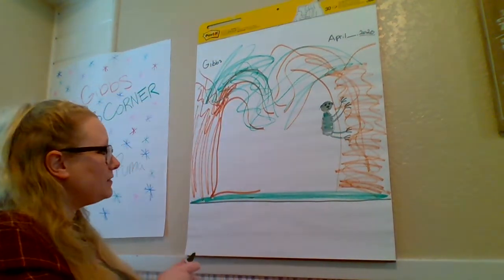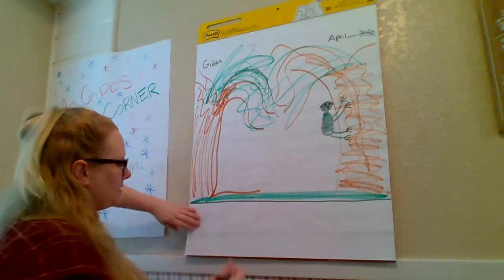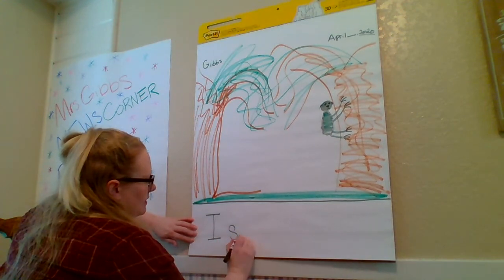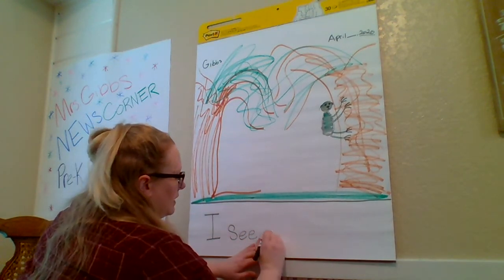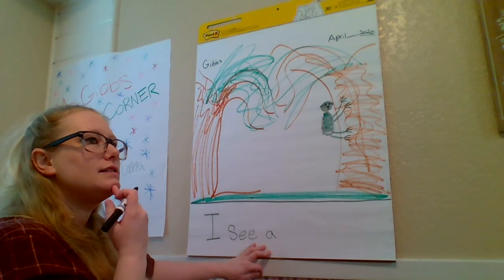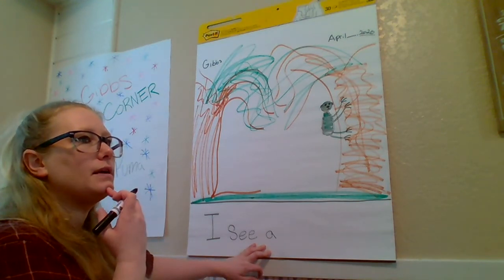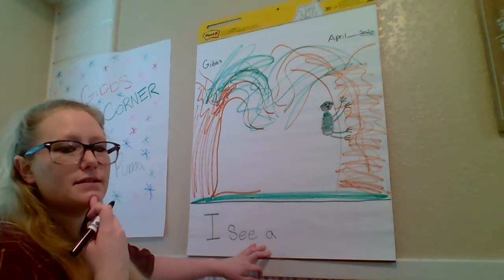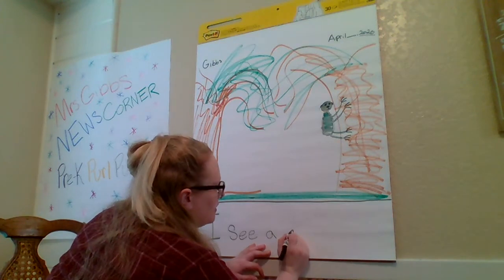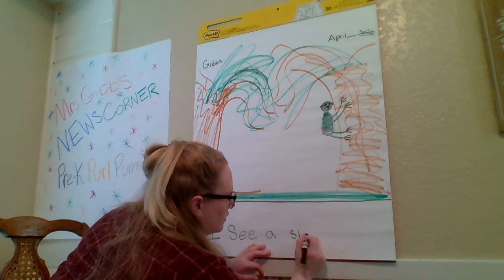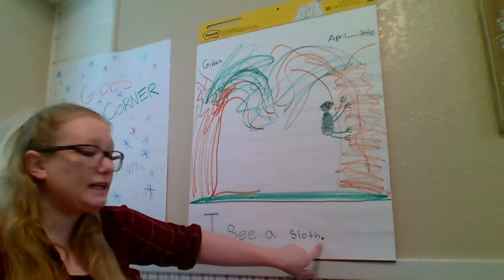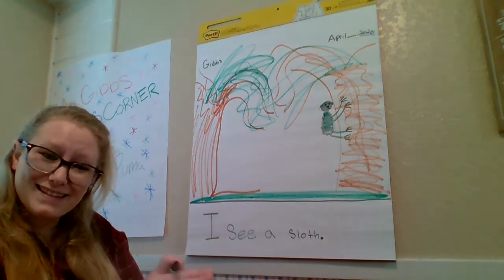Now I'm going to write my words. I'm going to write 'I see a sloth.' What letter does sloth start with? It has a sss sound — S, that's right. And then a period at the end, because the period tells the reader to do what? Stop. That's right.